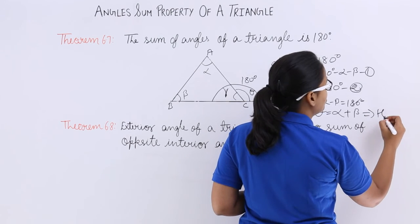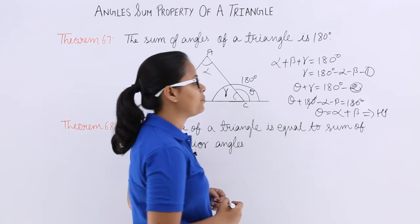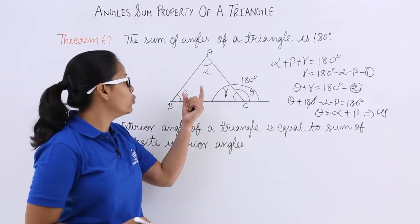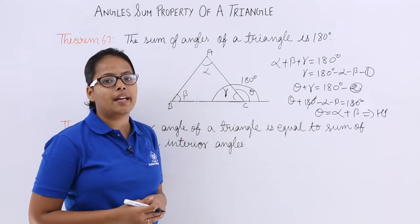Hence proved. Theta is coming out to be sum of two opposite interior angles.